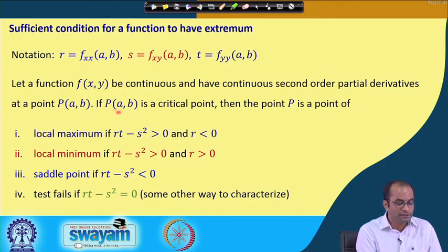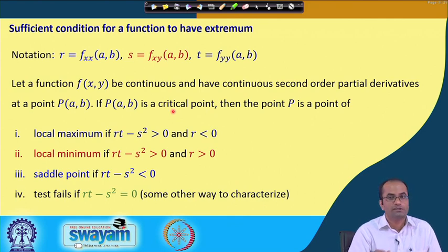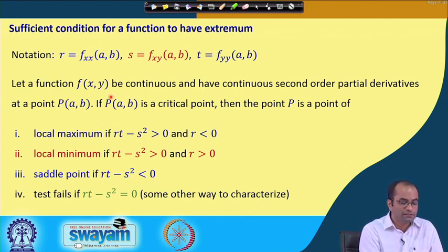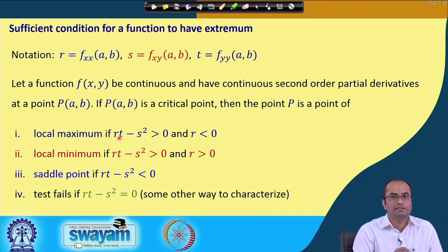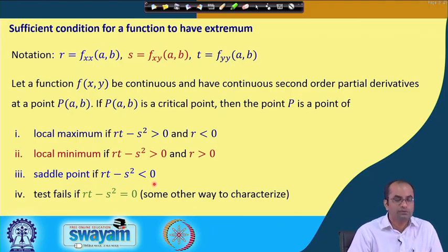Since we need the point to be a critical point as a necessary condition, we then discuss using the second order test — mainly the value of rt - s². We can find out whether the point is a local maximum, local minimum, or saddle point. When rt - s² = 0, this test fails.